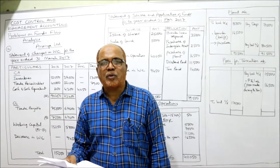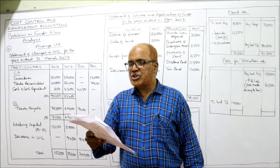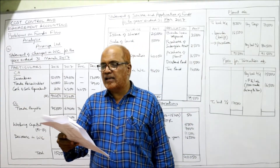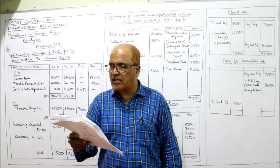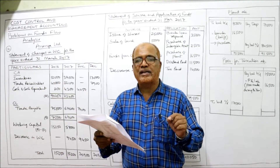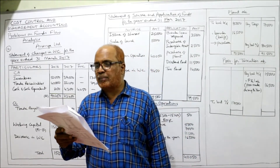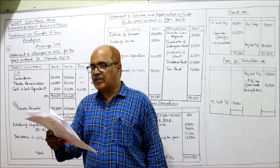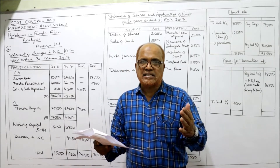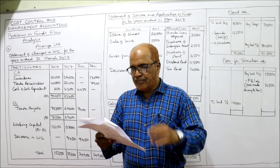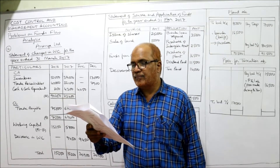Now we start problem number 12. From the following balance sheet of Ananya Limited as at 31st March 2016 and 31st March 2017, we are required to prepare the statement of source and application of funds for the year ended 31st March 2017. So last year is 2016 and current year is 2017. The balance sheet of Ananya Limited is given.